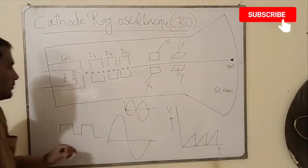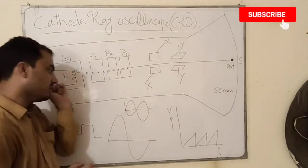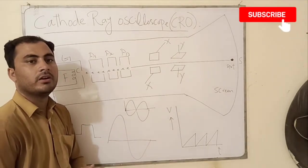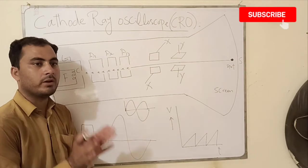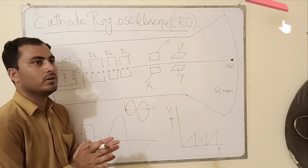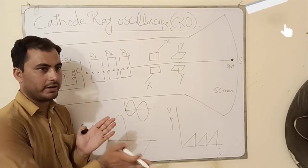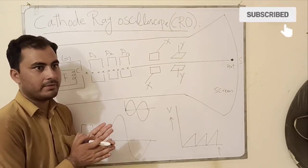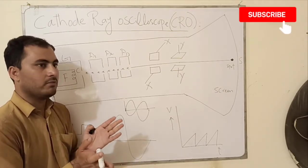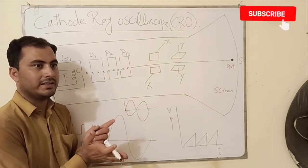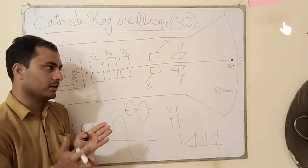Now if we are interested in order to get the sinusoidal waveform then it means that we have to apply the voltage along Y axis as well as the time-based voltage along X axis. With the time-based voltage along X axis we can sweep the electrical signal along X axis.